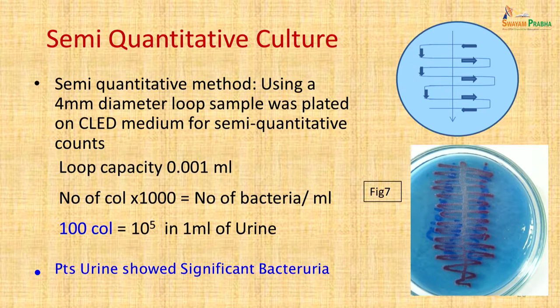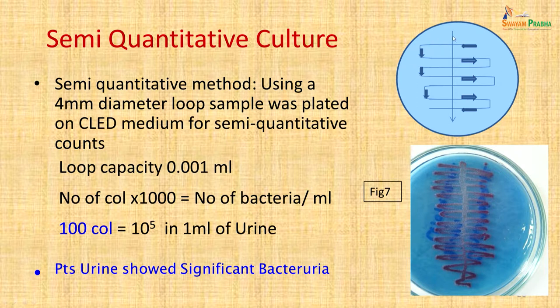Most laboratories do a semi-quantitative culture using a 4 mm diameter loop. A central streak is made and then horizontal streaks across the plate. The loop capacity is 0.001 ml, so colonies on the plate are multiplied by 1000 to get bacteria per ml. Usually 100 colonies represents 10⁵ organisms per ml of urine. This patient showed significant bacteriuria with more than 100 colonies on the plate.